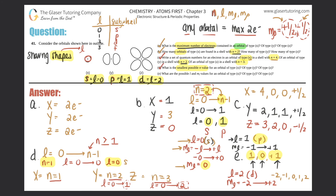Part e: what are the possible l and ml values for each orbital type? For type x: l=0, ml=0. For type y: l=1, ml= −1, 0, or +1. For type z: l=2, ml= −2, −1, 0, +1, or +2. These were already established while solving the earlier parts, so part e is essentially a recap of the l and ml values we've already calculated.